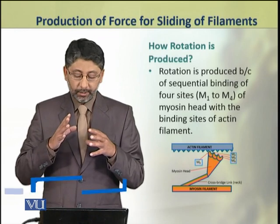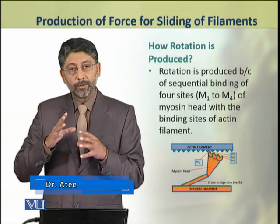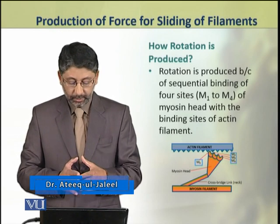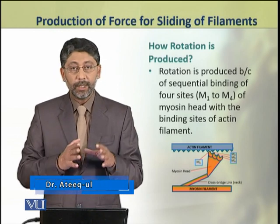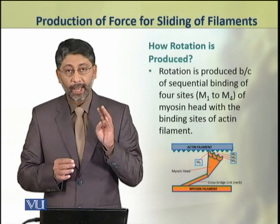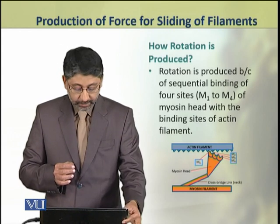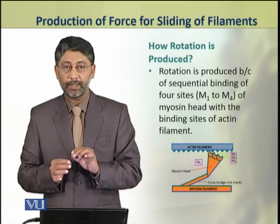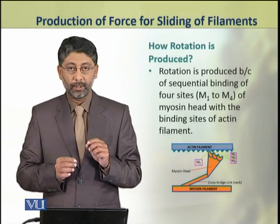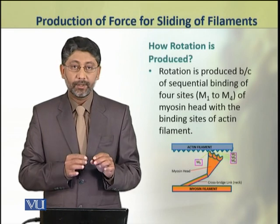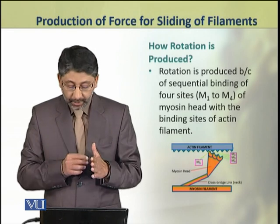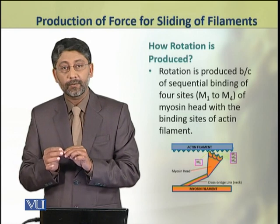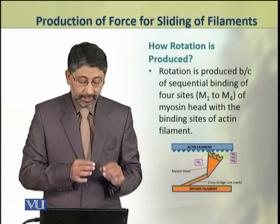Dear students, the rotation of myosin head is produced because the myosin head has four binding sites: M1, M2, M3, and M4. These sites sequentially bind with the binding sites present on the actin filament.